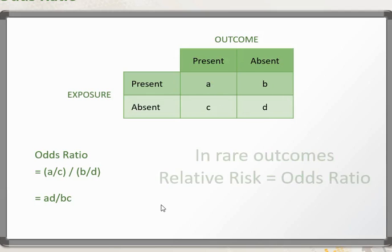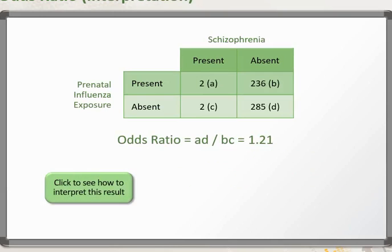In rare outcomes, the relative risk will approximate the odds ratio. So let's look at a practical example. In the 2x2 table here, the exposure is prenatal influenza exposure whilst the outcome is schizophrenia. As you can see, schizophrenia in this study is a very rare outcome, so in the denominator both A and C are very minute numbers.